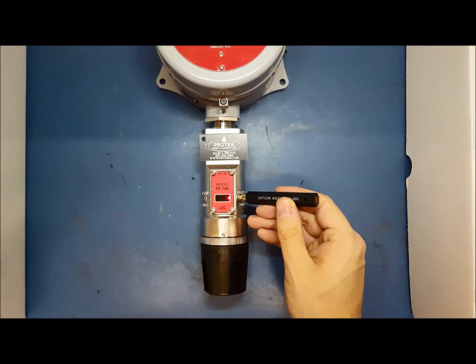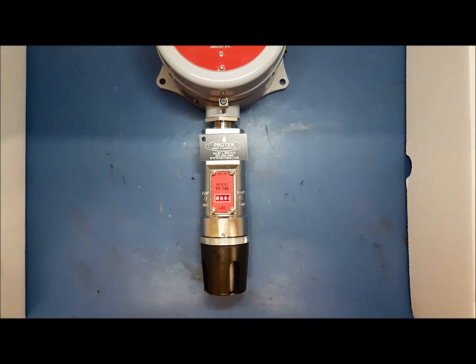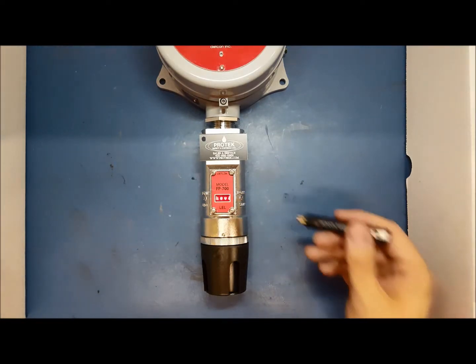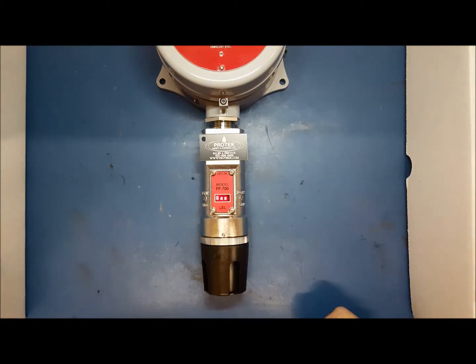Apply the magnet to PGM2 once more. Once the arrow appears pointing right, remove the magnet and the display will read Set Auto Span Level.